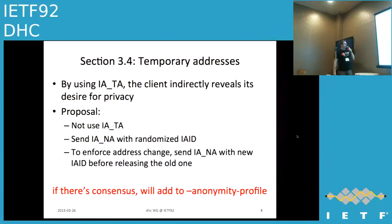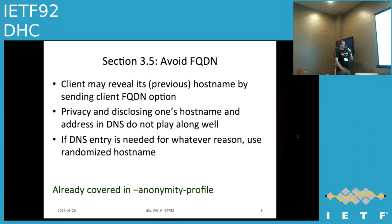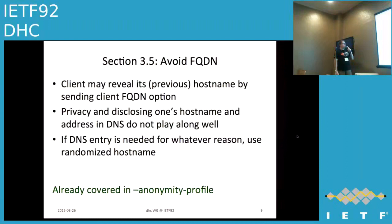There's no clear consensus on whether we should use temporary addresses or not, so we'll keep discussing on the mailing list. The next suggestion — also covered by the anonymity profile — is to avoid sending FQDN, because when the client sends FQDN it can reveal its hostname, which is another type of identifier that can be used to track the device. If FQDN is really needed, the best way is to use a randomized hostname, and the anonymity profile recommends this should be a hex version of the link layer address. One important point: every implementation should follow the same algorithm for randomizing the hostname, otherwise you can fingerprint the client operating system.